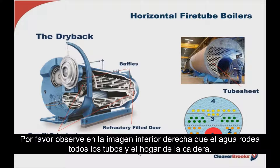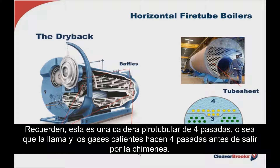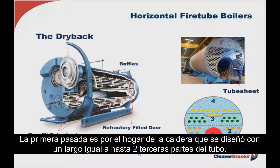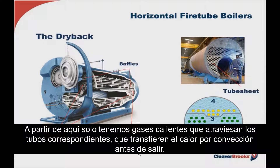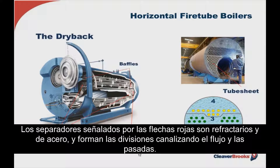In a four-pass fire tube border, the flame and hot gases make four distinct passes before exiting out the stack. Starting with the furnace as the first pass, the burner has been designed to match the volume and length of the furnace, allowing the flame to extend only about two-thirds of the way down it. From there, hot gases traverse through the respective tubes, convectively transferring their heat before exiting. Baffles — both refractory and steel — form the divisions channeling the flow between the passes.